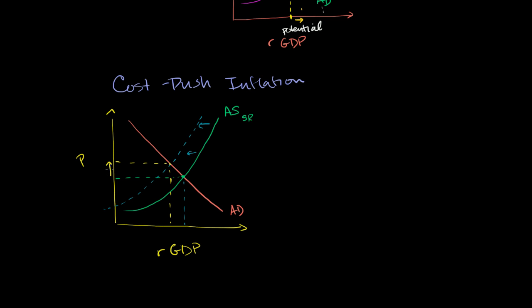Prices went up, but your GDP actually contracts. And this is a situation that you might have heard the word before. This is stagflation—inflation with stagnation. So this is stagflation.